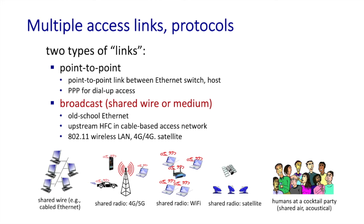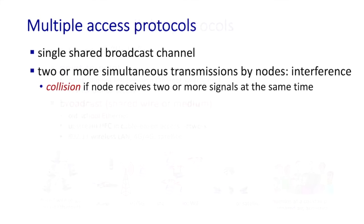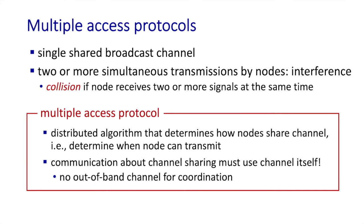In a human sense, we humans talk to each other all the time over a shared medium — at a cocktail party, in a class, wherever conversations take place. In the case that we have a single shared broadcast channel, we're going to need a multiple access protocol to coordinate access to this shared broadcast channel. When there are two or more simultaneous transmissions by a node, they're going to interfere with each other — we'll refer to that as a collision. If a node receives two or more signals at the same time, neither of those transmissions are going to be successful.